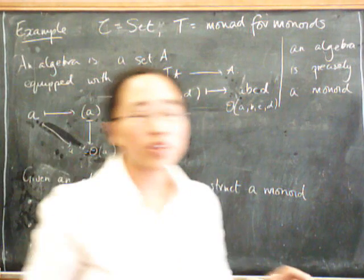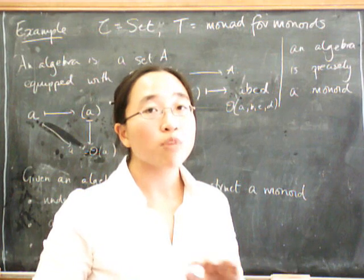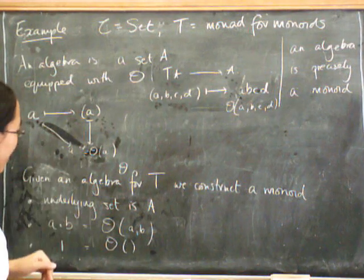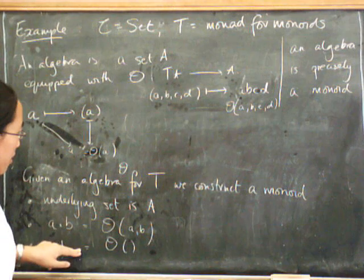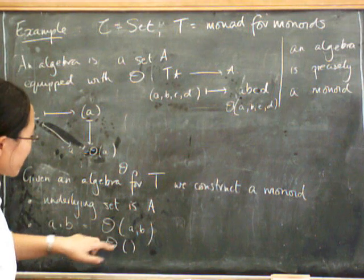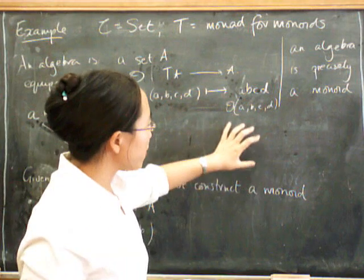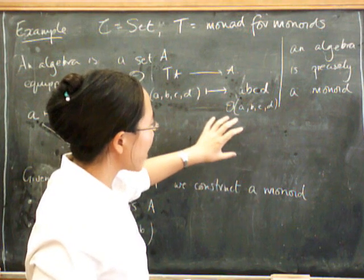That is to say, we've got this action theta. It's not allowed to do anything remotely interesting on the one element words. It has to just leave them exactly as they are. So the unitality and the associativity came from the interaction of theta with mu over here.